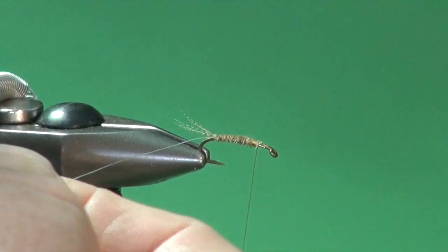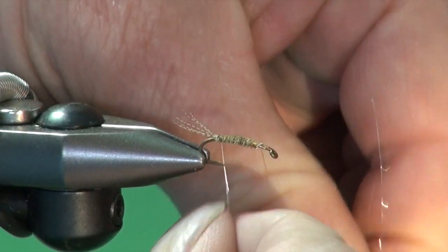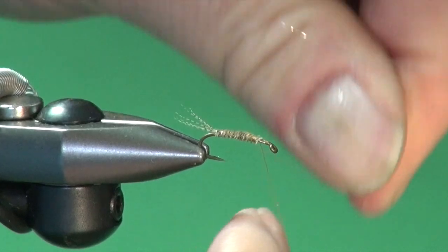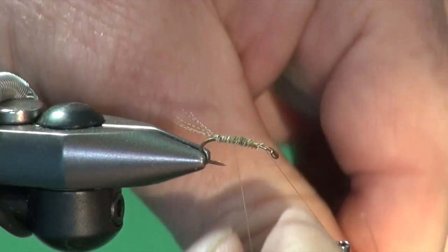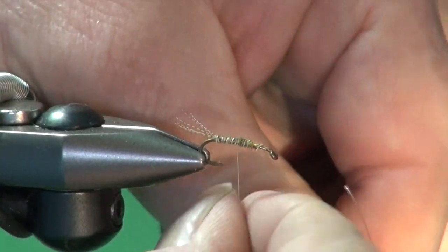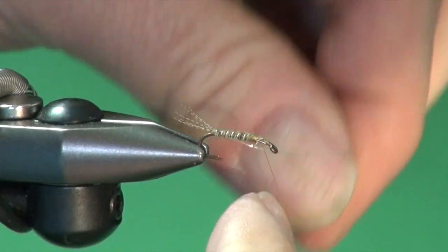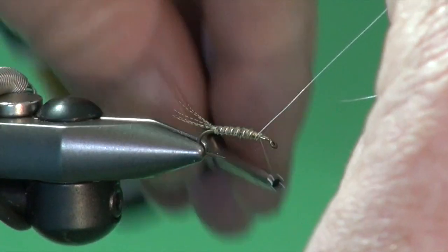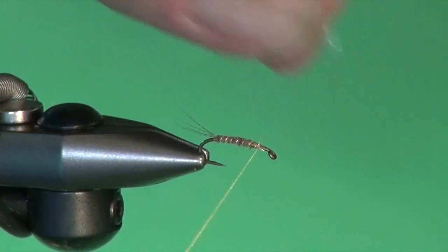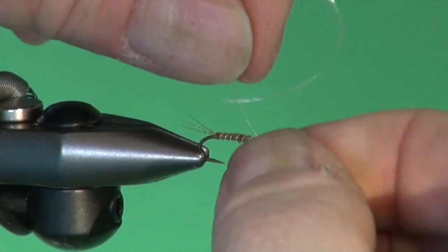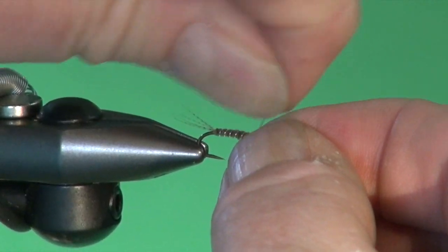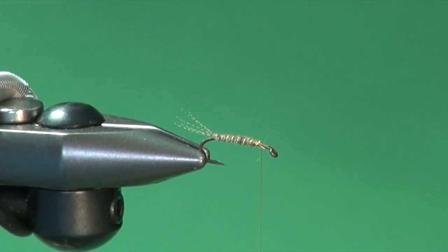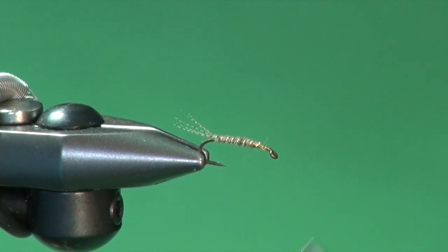I'm going to take our ribbing and just wind that forward over the body. Just add a little reinforcement, some segmentation, and of course flash as we talked about earlier. Let's tie that off. Pull and twist. And now we're going to go forward right up to the hook eye.